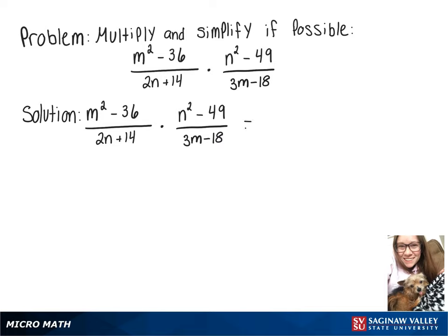So to begin, we have to multiply across the top, giving us m squared minus 36 times n squared minus 49. And then we have to multiply across the bottom, which gives us 2n plus 14 times 3m minus 18.